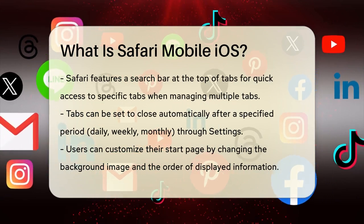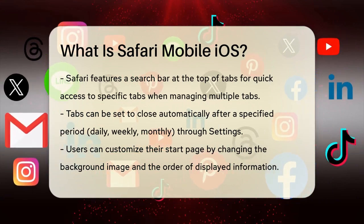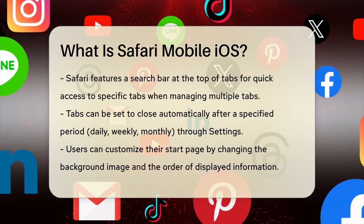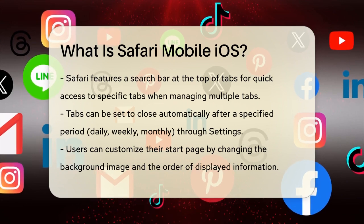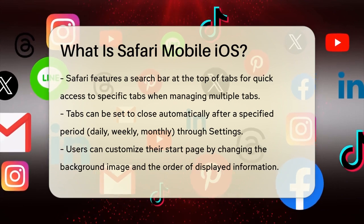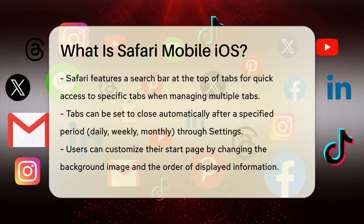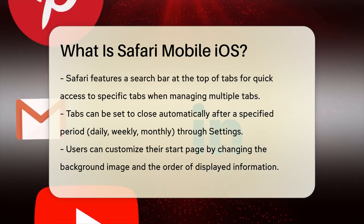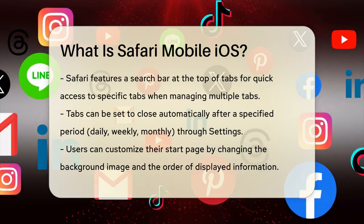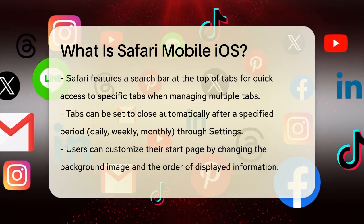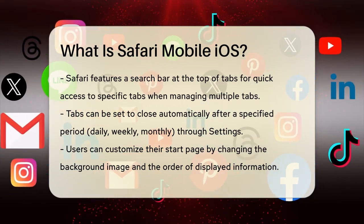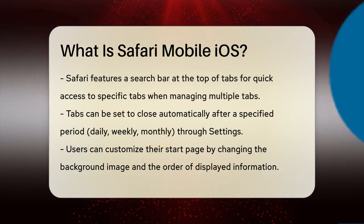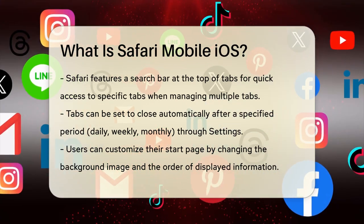When managing multiple tabs, Safari has a handy search feature. If you scroll to the top of your tabs, a search bar appears, allowing you to find specific tabs quickly. You can also set your tabs to close automatically after a certain period, such as daily, weekly, or monthly, by going to Settings, Safari, Close Tabs.